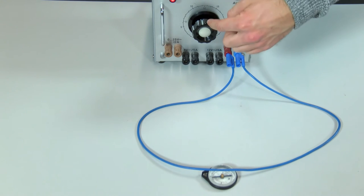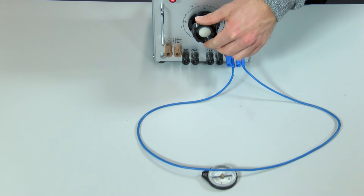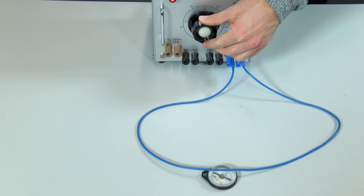As long as no current flows through the power cable, the compass needle points towards the two poles of the Earth. However, if you turn up the voltage of the power supply unit, electric current flows through the power cable. The compass needle is now aligned perpendicular to the power cable.